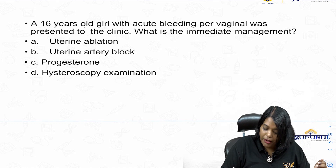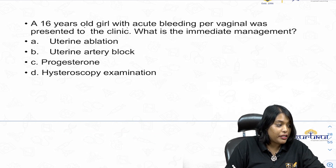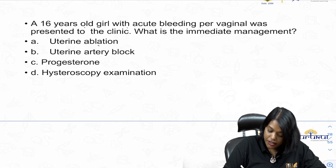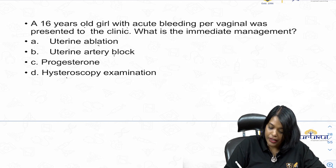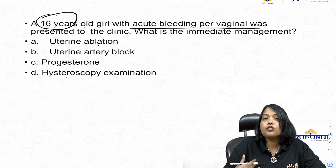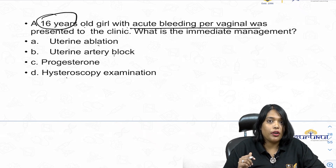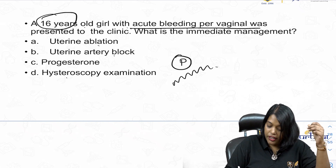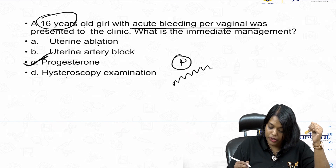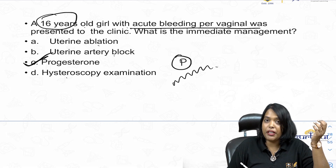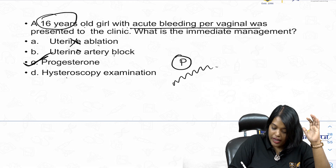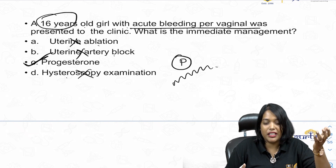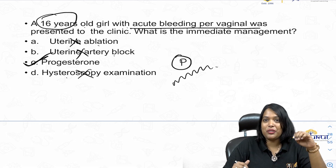A 16-year-old girl with acute vaginal bleeding presents to the clinic. What is the immediate management — uterine ablation, uterine artery block, progesterone, or hysteroscopic examination? Bleeding in a 16-year-old is due to estrogen excess. Progesterone can be given to stop the bleeding — it inhibits further growth of the endometrium caused by estrogen. Uterine ablation is used for PPH, not here. Uterine artery block is also not indicated. Invasive procedures should be avoided in a 16-year-old. The answer is progesterone.